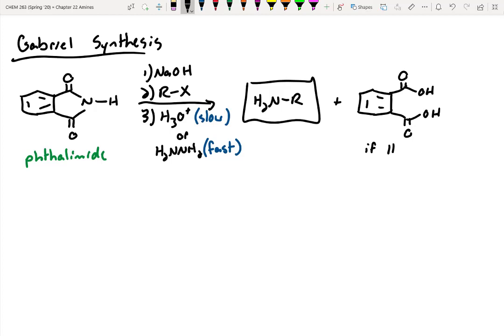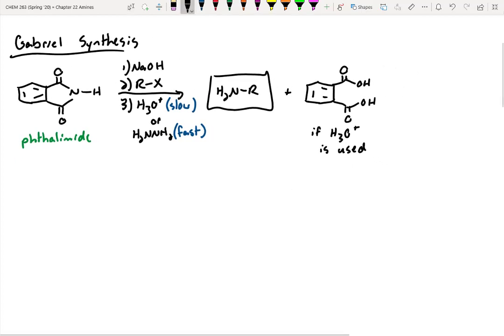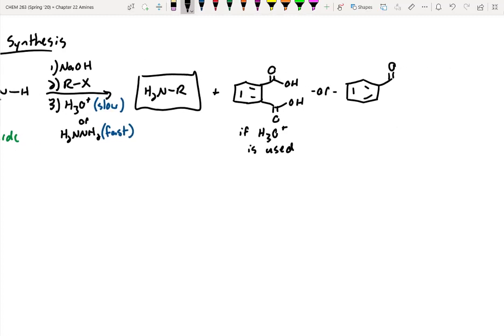If you use hydrazine, you get a different byproduct, but it looks fairly similar. Instead of getting a carboxylic acid, what you're going to get is you're going to get an amide. But in this case, you're actually going to form a new ring system here. And this is if hydrazine is used.